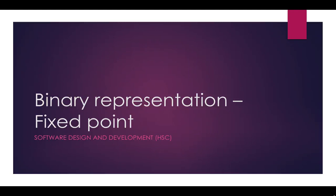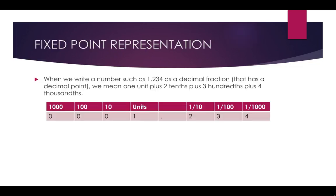In this video we will be looking at how to represent binary fractions using fixed point methods. When we write a decimal number like 1.234 as a decimal fraction, it has a decimal point. What we mean is that there's one unit plus two tenths, plus three hundredths, plus four thousandths.